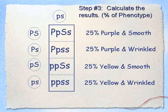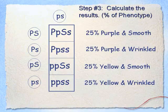My next genotype is big P, little p — giving me purple corn — and little s, little s. That's homozygous recessive, so the wrinkled trait will show: purple and wrinkled. The third genotype is little p, little p — homozygous recessive, giving me yellow corn — with big S, little s, heterozygous, so it shows the dominant smooth trait: yellow and smooth. And the last one is little p, little p and little s, little s — homozygous recessive for both — giving yellow and wrinkled. Note that genotype and phenotype percentages don't always match up, but in this case they happen to.